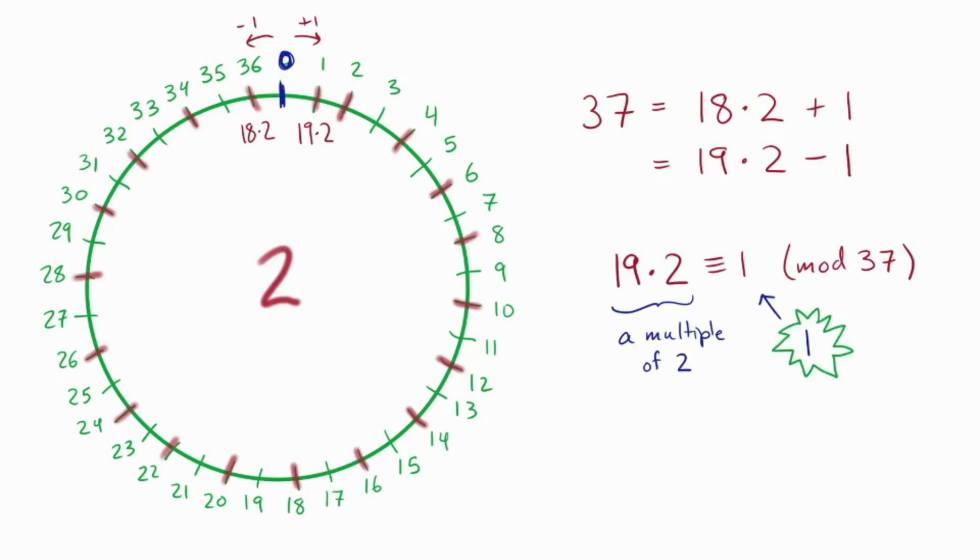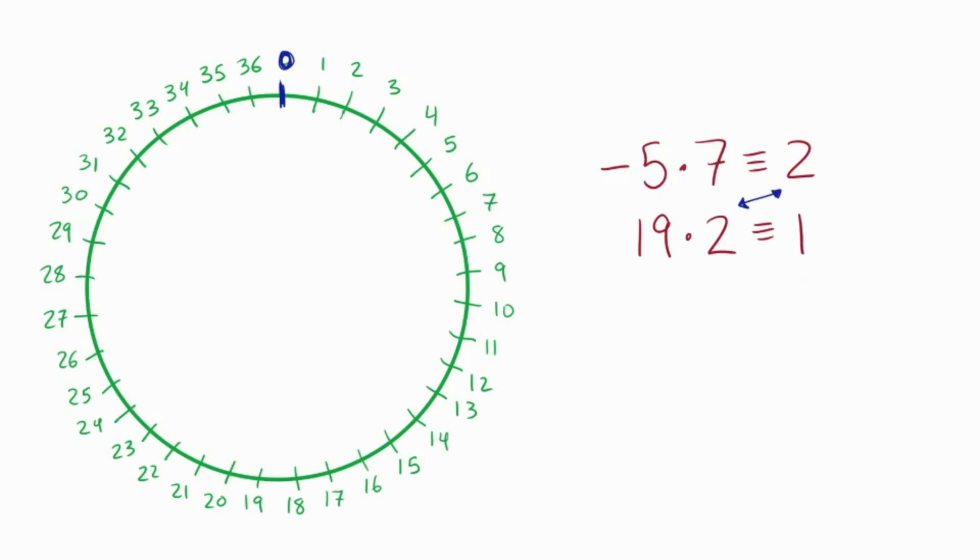I think the second of these is nicest because it actually says that 19 times 2 is 1 mod 37. In other words, I found a multiple of 2 that's smaller than 2, namely 1. But 1 is what we were hoping for. I've actually just found the inverse of 2.